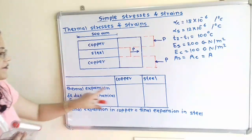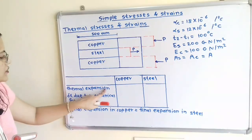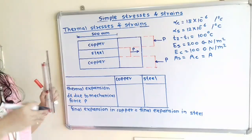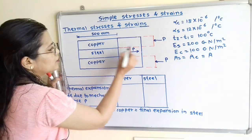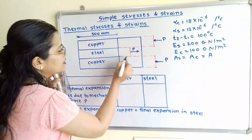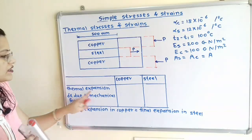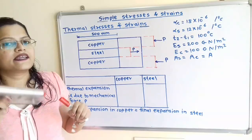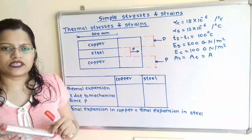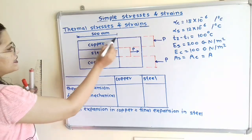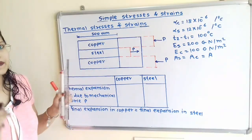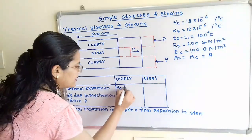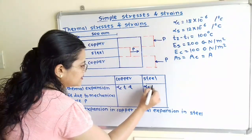To find out the stresses, we will prepare a table. In the first column we show the thermal expansion. When there is an increase in temperature, the thermal expansion formula is: coefficient of linear expansion multiplied by increase in temperature multiplied by original length. Since the original length for all three bars is the same L, for copper the thermal expansion is α_C · T · L, and for steel it is α_S · T · L.